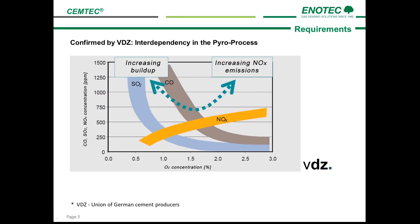Let's take a look at this graph from the Union of German Cement Producers, the VDZ, which confirms the interdependency of O2, CO, and NOx in the pyro process. We see the O2 concentration in percentage here, and the concentration of CO, SO2, and NOx in ppm here. The excess O2 sweet spot from the main burner will be around this area, between one and two percent. As you can see, this concentration of excess O2 influences the values of CO and NOx and contributes to build-up in regard to SO2.